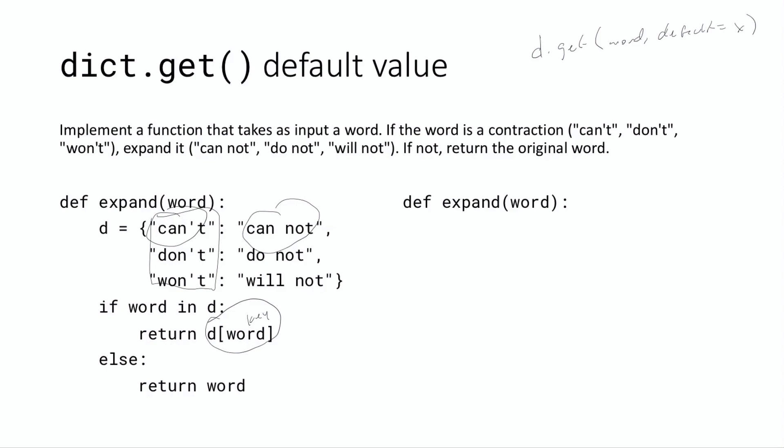And the idea is that basically what this does - if we say something like our answer is equal to that - basically answer will be equal to d[word], the value associated with that key, if word in d, so if that word is a key in the dictionary, and it will be the default value, which I guess we said was x. So it'll be x otherwise.